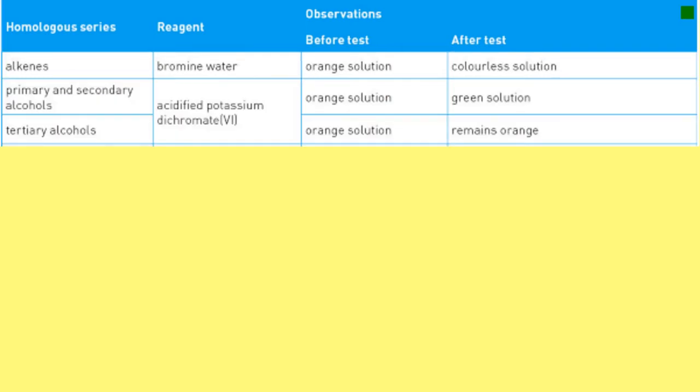Next, let's do the alcohols — firstly, the primary and secondary alcohols. For those we want to add acidified potassium dichromate, which is an oxidising agent. It does react with primary and secondary alcohols. Before it's reacted, it's orange because the chromium is in a 6+ oxidation state, and that is orange coloured.